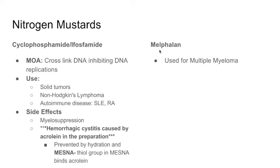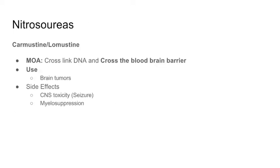Next nitrogen mustard is melphalan — a relatively low-yield drug used for multiple myeloma. I wouldn't focus too much on it.